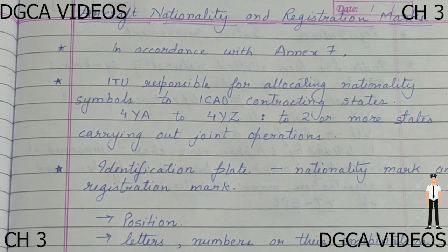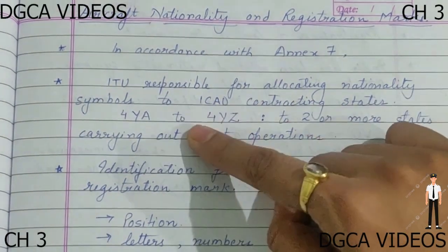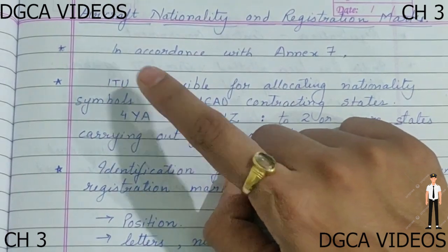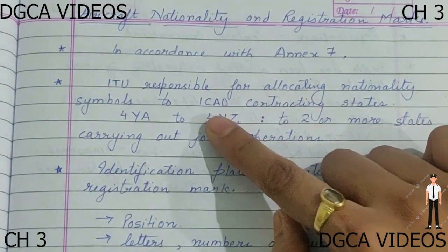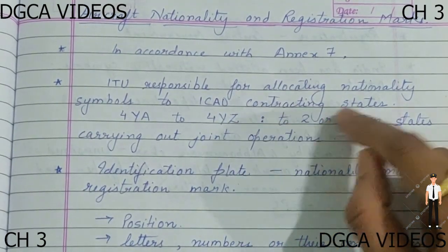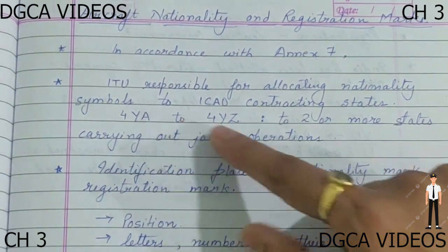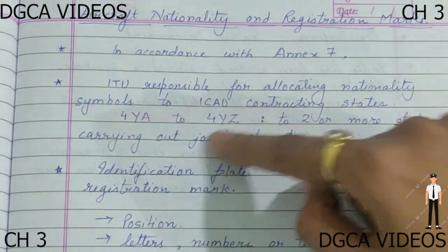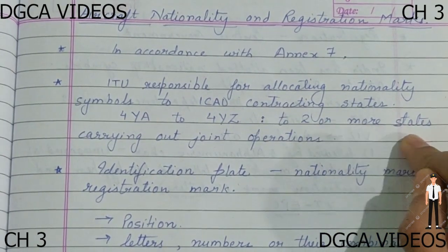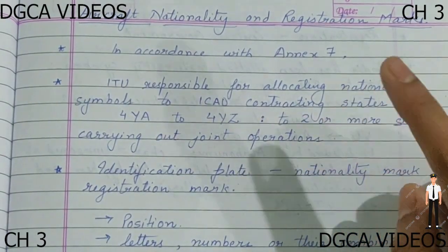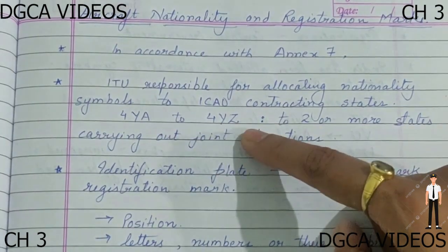Moving forward, ITU is responsible for allocating nationality symbols. ITU stands for International Telecommunication Union, and it is responsible for giving the nationality symbols to the ICAO contracting states. The symbol 4YA to 4YZ is provided for two or more states carrying out joint operations. Please remember: 4YA to 4YZ is for joint operations.